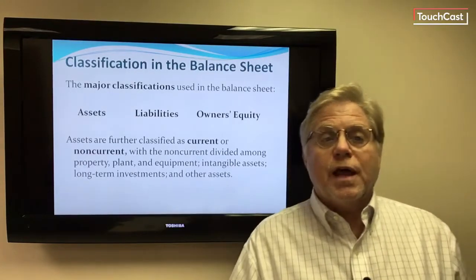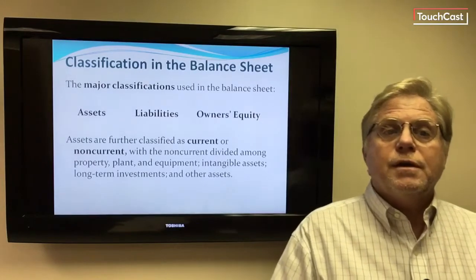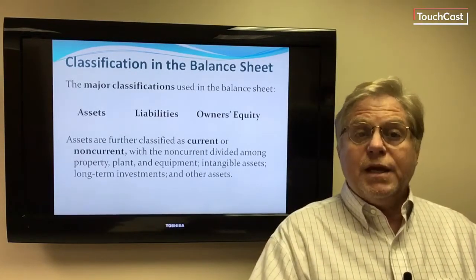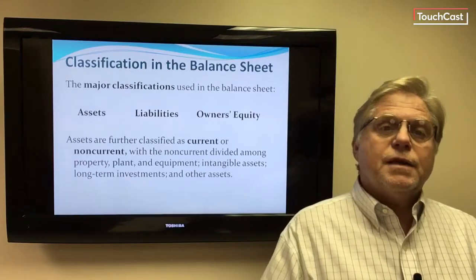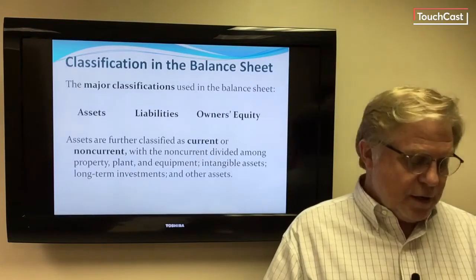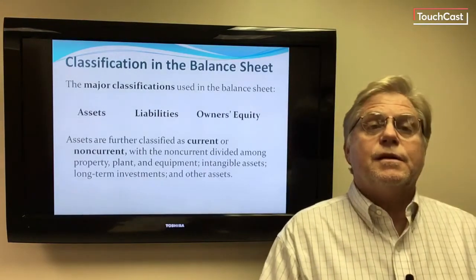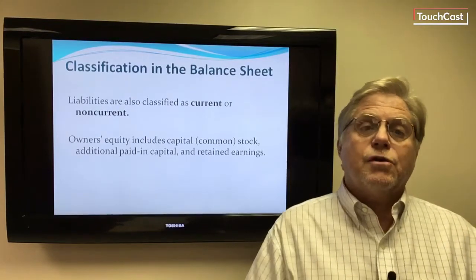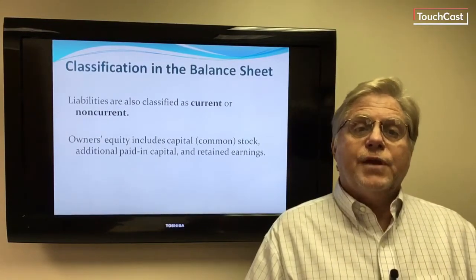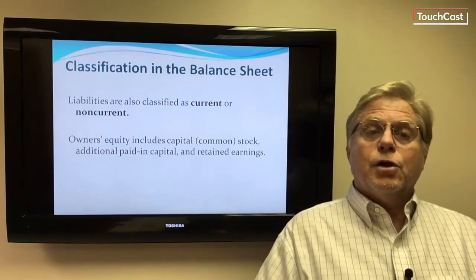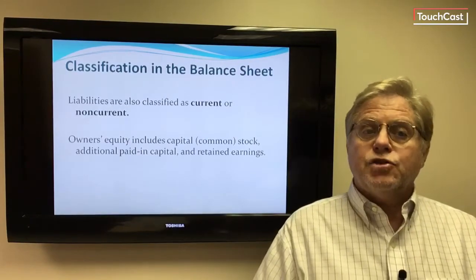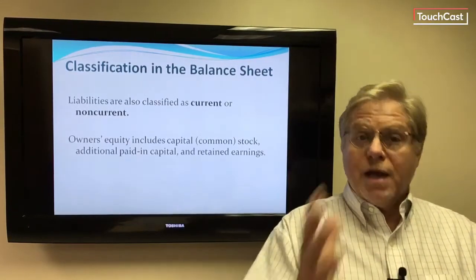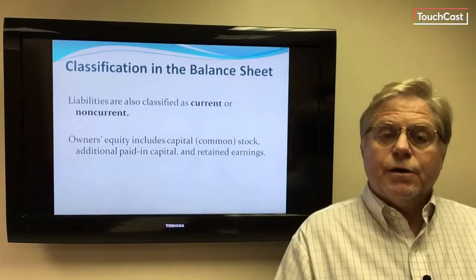Assets are further classified as current or non-current, with non-current divided further among PP&E, intangible assets, long-term investments, and other assets. Liabilities are also classified as current or non-current. Owner's equity includes capital or common stock and additional paid-in capital — those two make up what we call paid-in capital — and then retained earnings.